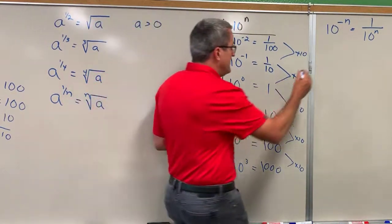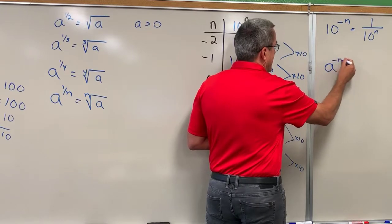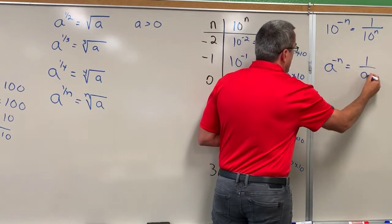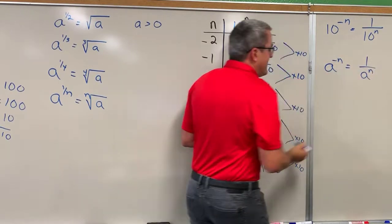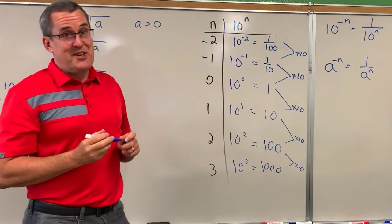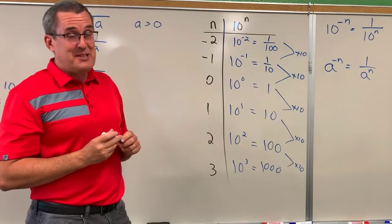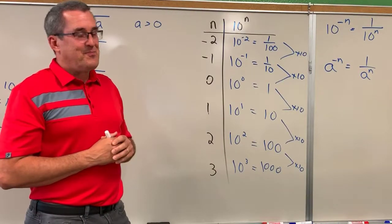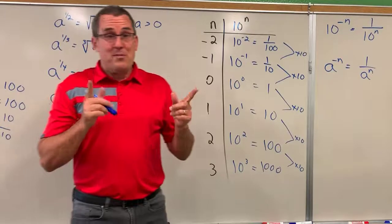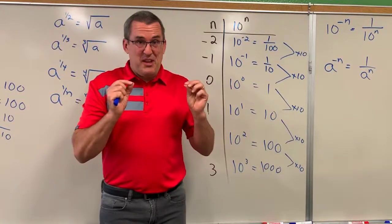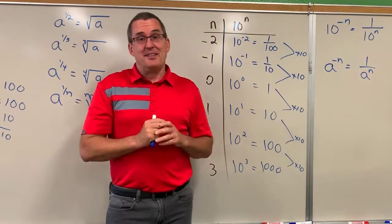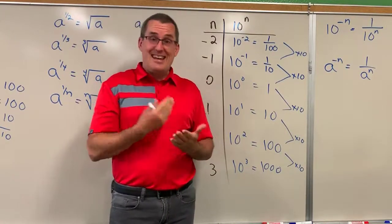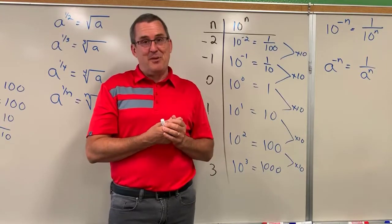In general, a raised to the negative n power gives 1 over a to the n — again, with a greater than zero. I hope that helps you really think about and make sense of what happens when you have fractional exponents and negative exponents in the work that you do.